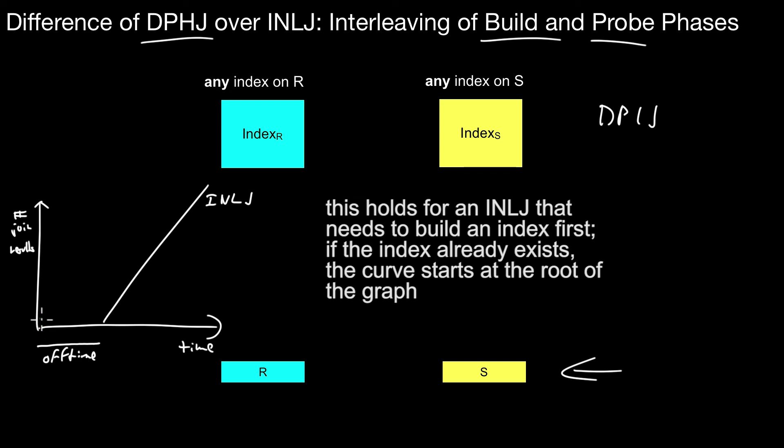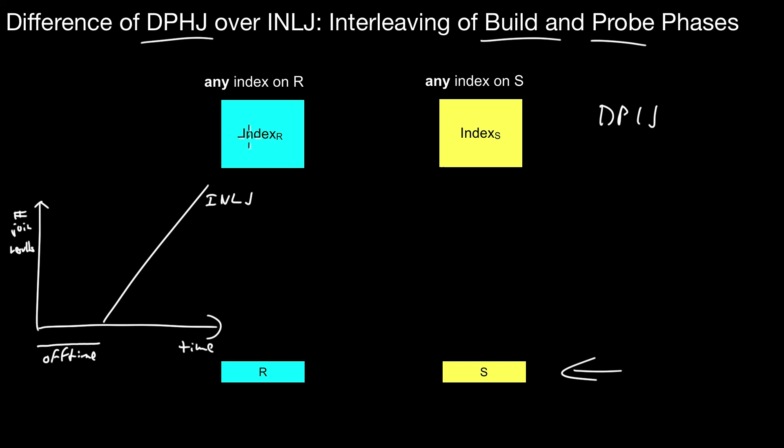In contrast for double pipeline index join you immediately start building up both of the indexes. Of course the likelihood is very low that early on you produce many results, but there is some likelihood that you produce some result. You see here already you produce some of the results rather than having nothing.